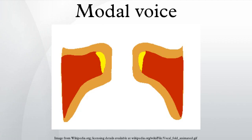A well-trained singer or speaker can phonate two octaves or more within the modal register with consistent production, beauty of tone, dynamic variation, and vocal freedom. The modal register begins and ends in different places within the human voice, and its placement is one of the key determining factors in identifying vocal type.